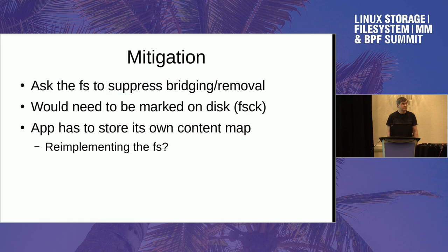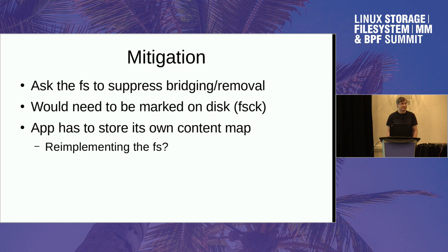With ext4 today, there is a tunable where you can actually say what's the maximum size where we will bridge the gap with allocated blocks that are all zeroed. The default is eight file system blocks. The workaround I told David about was to simply set the tunable to zero, which solves the problem on a per-file-system basis. A file flag is probably more appropriate so that it's on a per-file basis. I don't have an objection to doing that, modulo finding a free bit in the inode flag namespace.